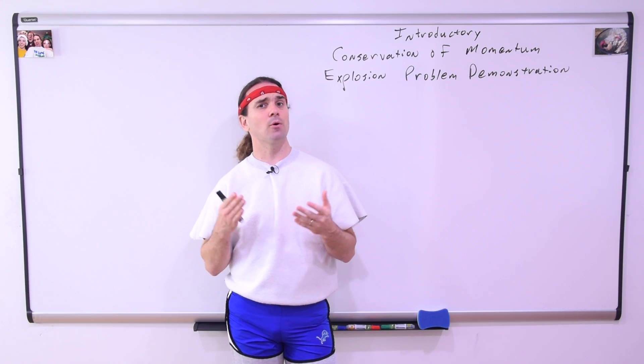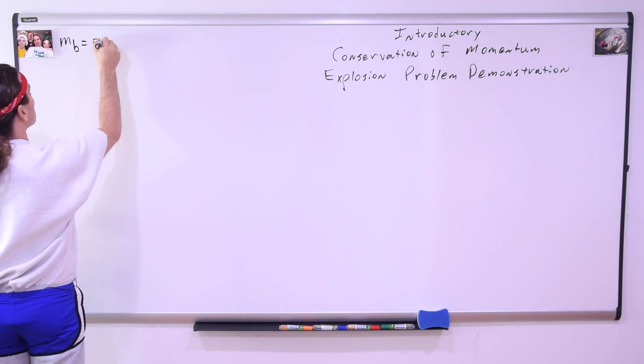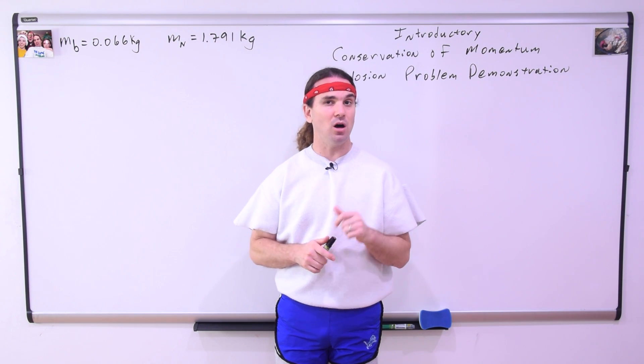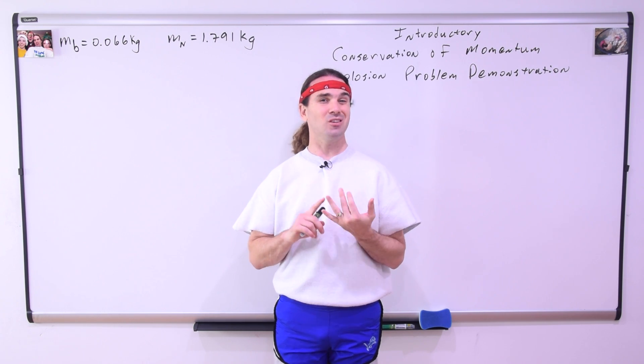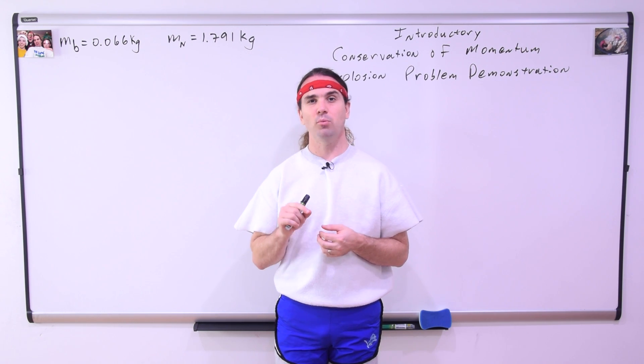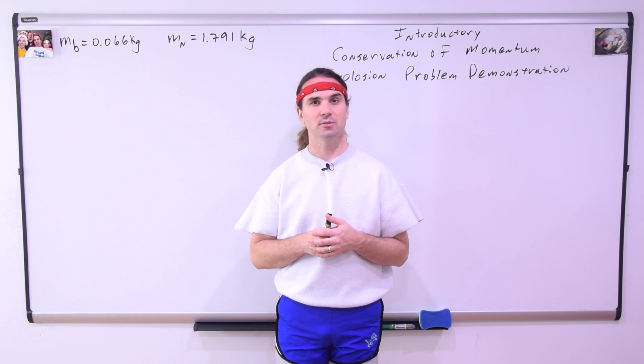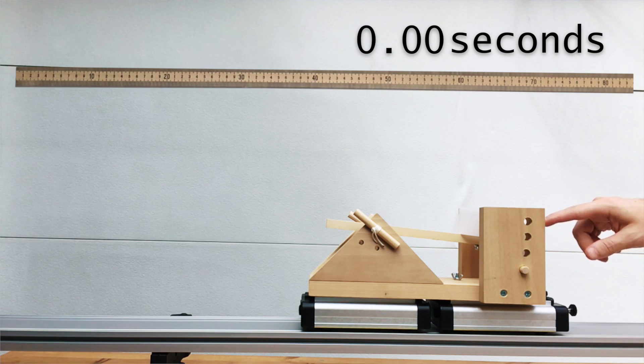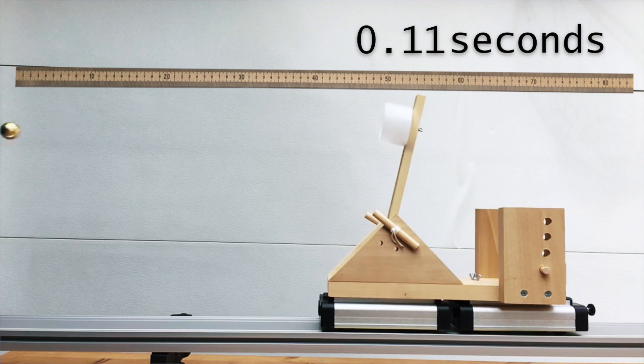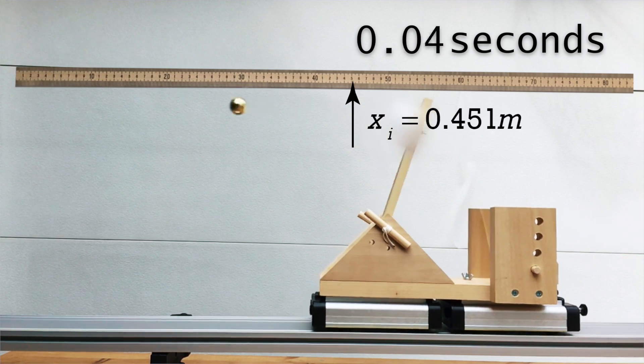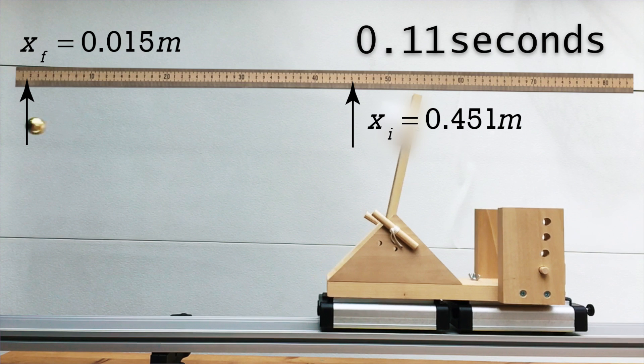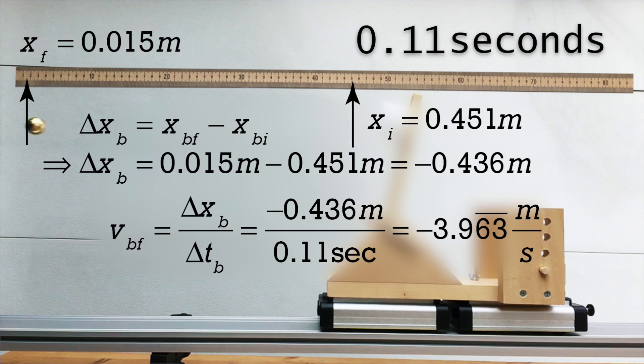Let's write down our known values. The mass of the brass ball is 0.066 kilograms. And the mass of the Nerdapult plus the two momentum carts is 1.791 kilograms. I overlaid a picture of a meter stick on the video to show that after the explosion,